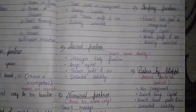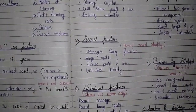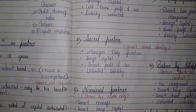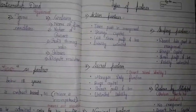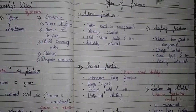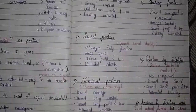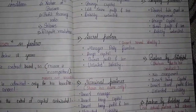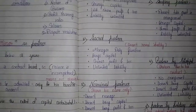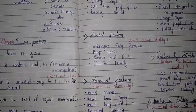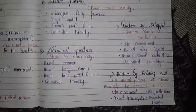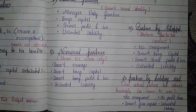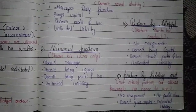A secret partner is similar to an active partner, but the key difference is that a secret partner does not reveal his identity while an active partner does. A secret partner also manages daily functions, brings capital, shares profit and loss, and has unlimited liability.